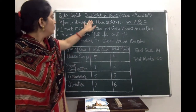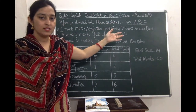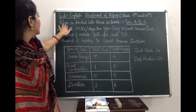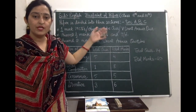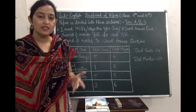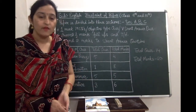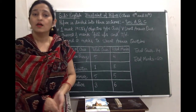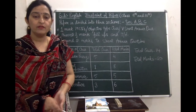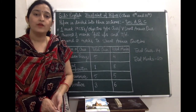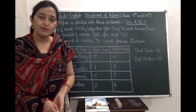The blueprint is the same for Class 9 and Class 10. The paper is divided into three sections: Section A, Section B, and Section C. Section A is the unseen passage, where you will get a comprehension passage. You have to read it thoroughly and then answer the questions based on the passage.